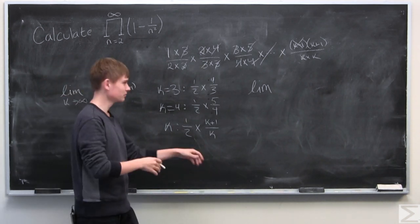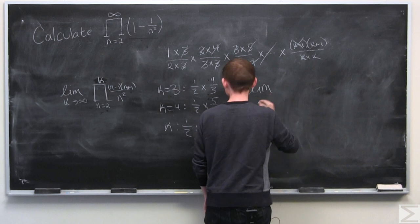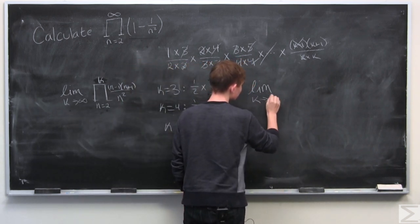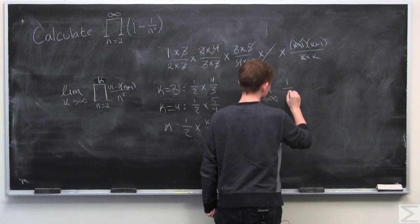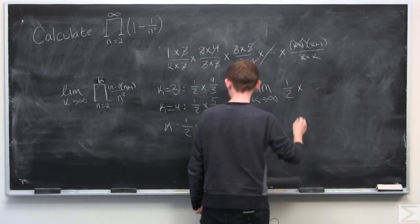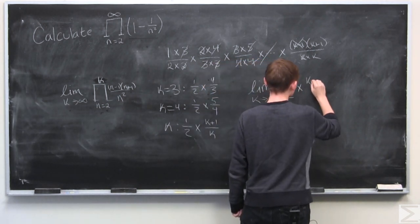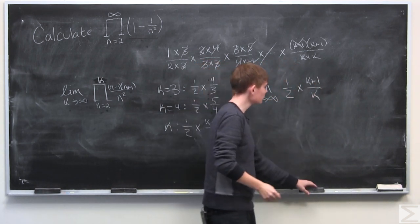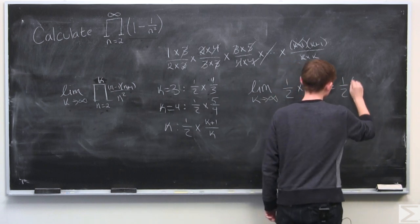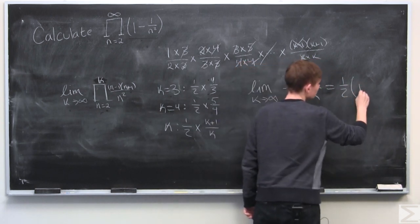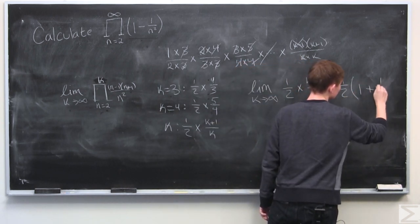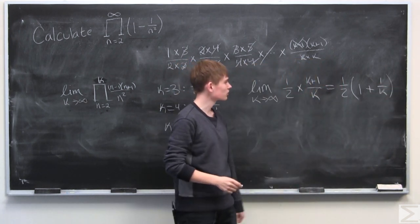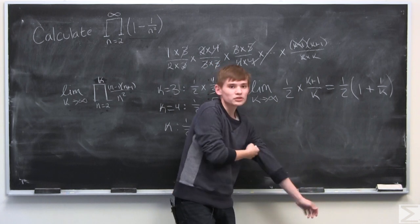So now we have to find the limit as k approaches infinity of 1 half times k plus 1 over k. And we can simplify this to 1 half times 1 plus 1 over k, because k plus 1 over k simplifies to 1 plus 1 over k.